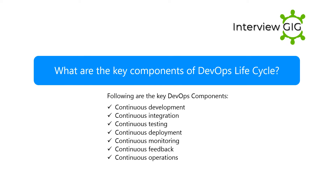What are the key components of the DevOps lifecycle? Following are the key DevOps components: continuous development, continuous integration, continuous testing, continuous deployment, continuous monitoring, continuous feedback, and continuous operations.